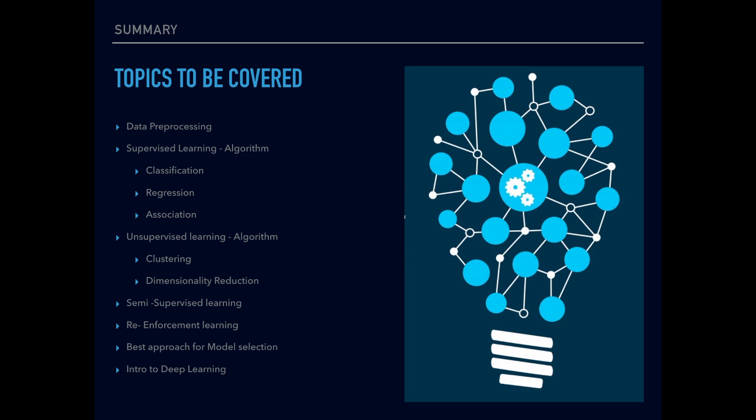The second topic will be supervised learning — classification algorithm, regression algorithm, and association rules. The next topic will be unsupervised learning, where we will cover clustering algorithm, dimensionality reduction (PCA). Then semi-supervised learning, which is a combination of both supervised and unsupervised learning. After that, reinforcement learning, and then the best approach for model selection — how to fine-tune the model to get more accuracy.